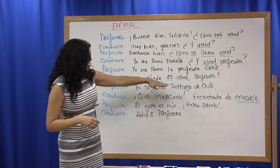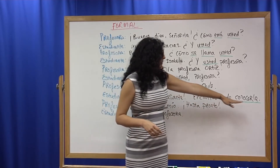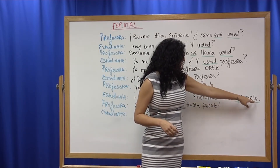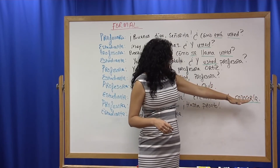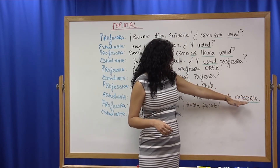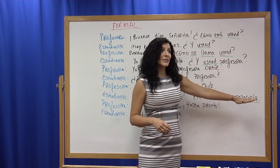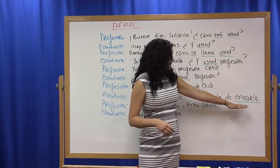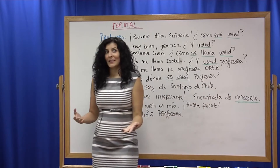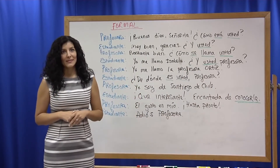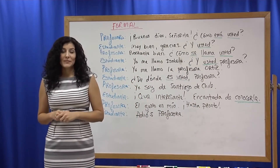We also have here "usted," and then we used a formal pronoun at the end. So if this were informal, we would say "conocerte," but as we use it in a formal situation, we say "conocerle," indicating that we are in a formal register. And that's how we would use the formal.